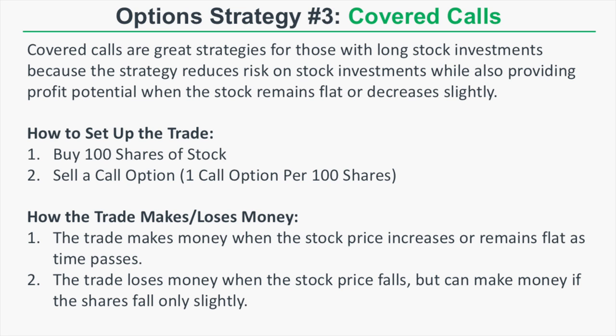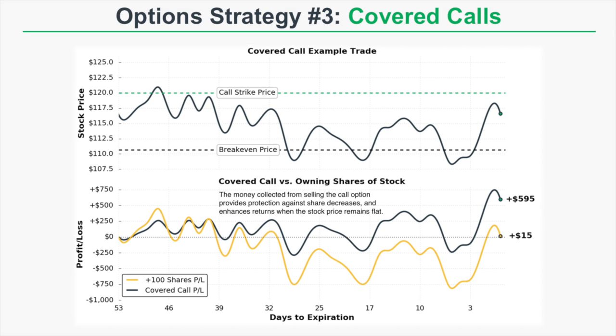Here is our example trade for a covered call. On the top part of this graph we're looking at the changes in the stock price relative to the call option we sell as part of our covered call, and also our break-even price for that covered call. On the bottom part of the graph, the dark line is the covered call profit and loss and the yellow line is the profit and loss of just owning 100 shares of stock without selling a call option against it.